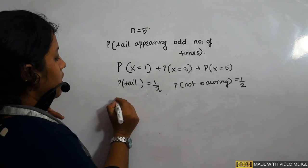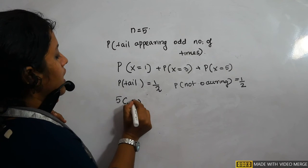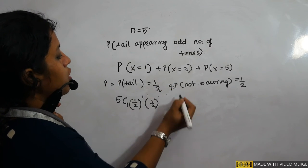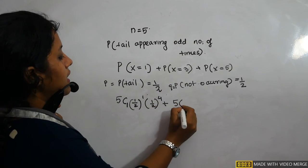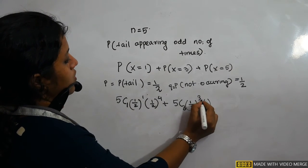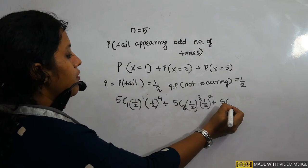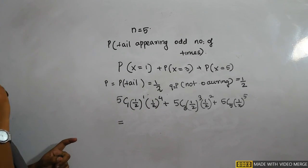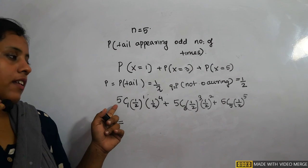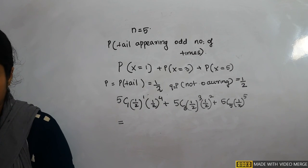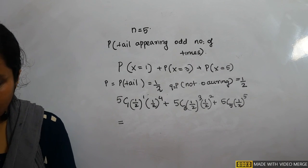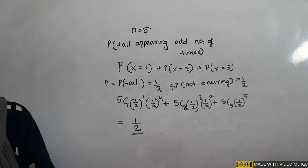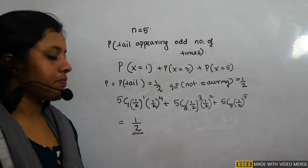P(X=1) + P(X=3) + P(X=5) = 5C1·(1/2)^1·(1/2)^4 + 5C3·(1/2)^3·(1/2)^2 + 5C5·(1/2)^5. Using nCr = n!/(r!(n−r)!) and expanding, you get the answer 1/2. So the answer is option A: 1/2.